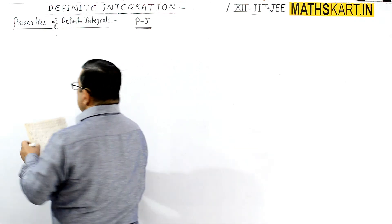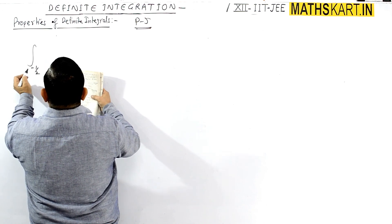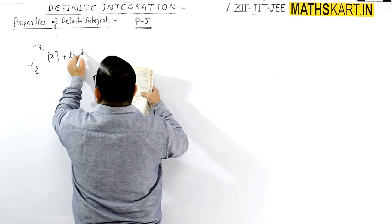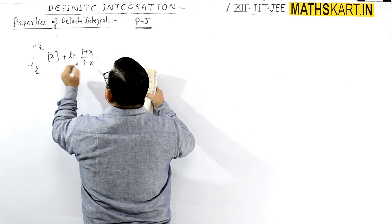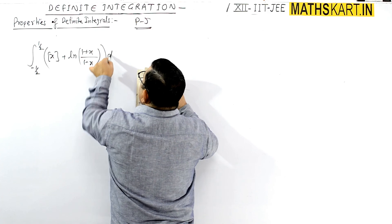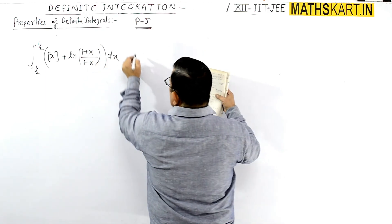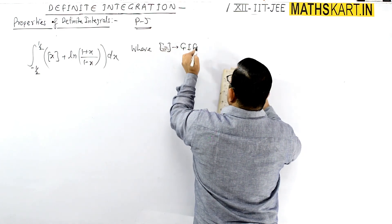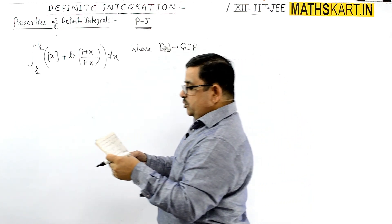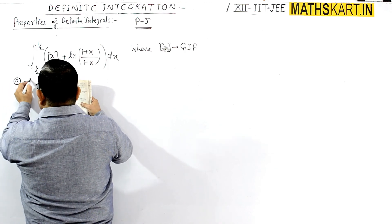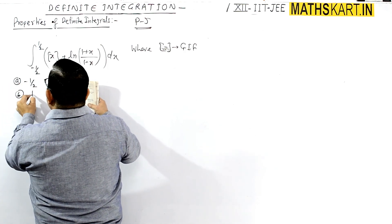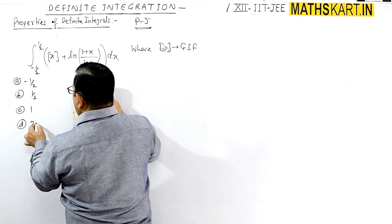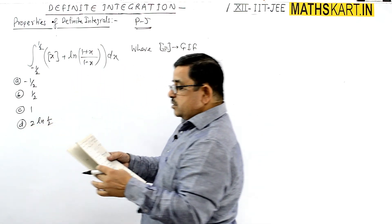Next question: Evaluate the integral of greatest integer of x plus ln(1+x)/(1-x) dx, where the box denotes the greatest integer function. Options are: A) -1/2, B) 1/2, C) 1, and D) 2 ln(1/2).